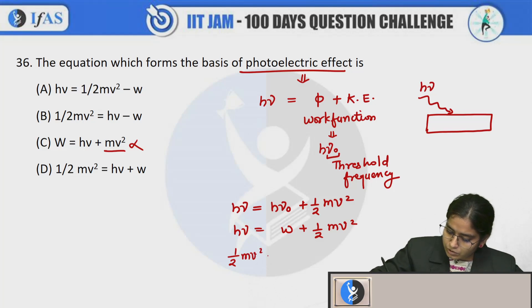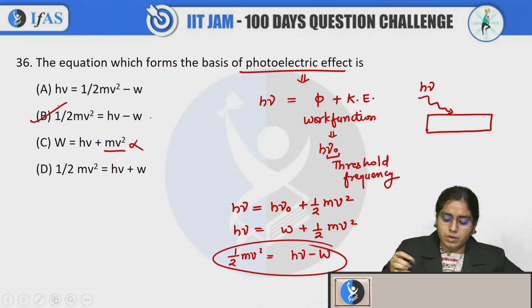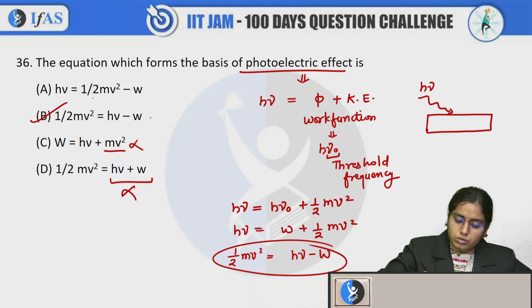This kinetic energy will be actually h nu minus w. So this equation is exactly same - this is h nu plus w, this will be wrong. h nu is equals to this plus this one, so this is also wrong. So the B option is the correct option.